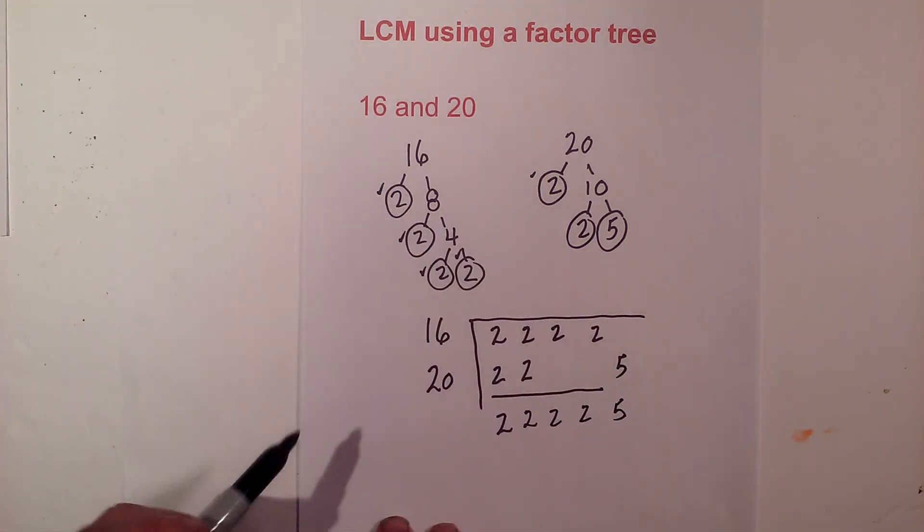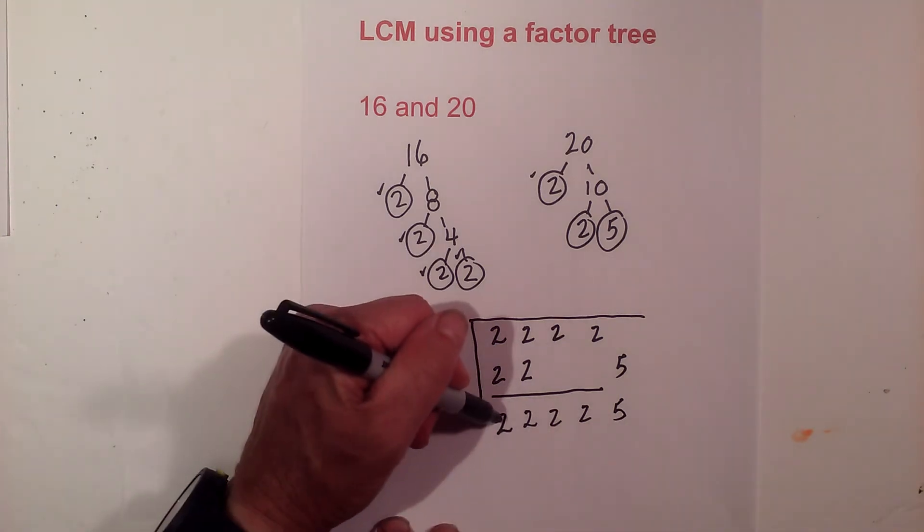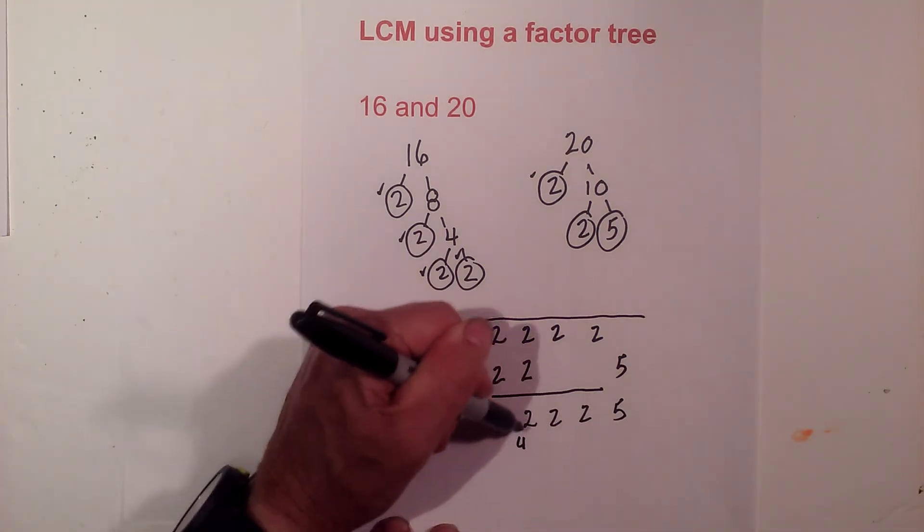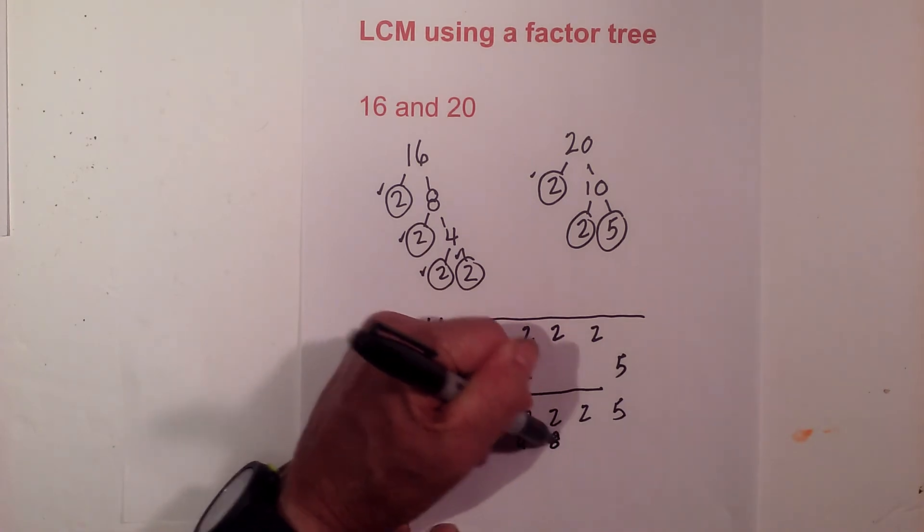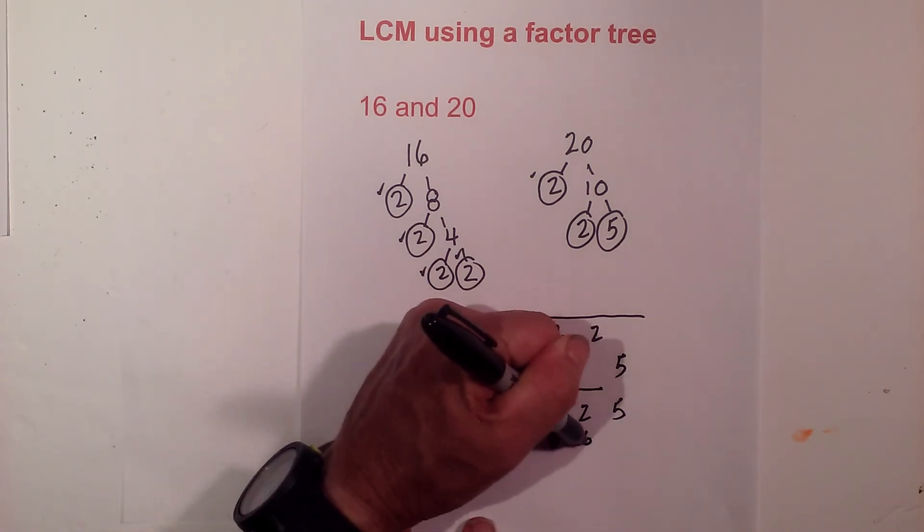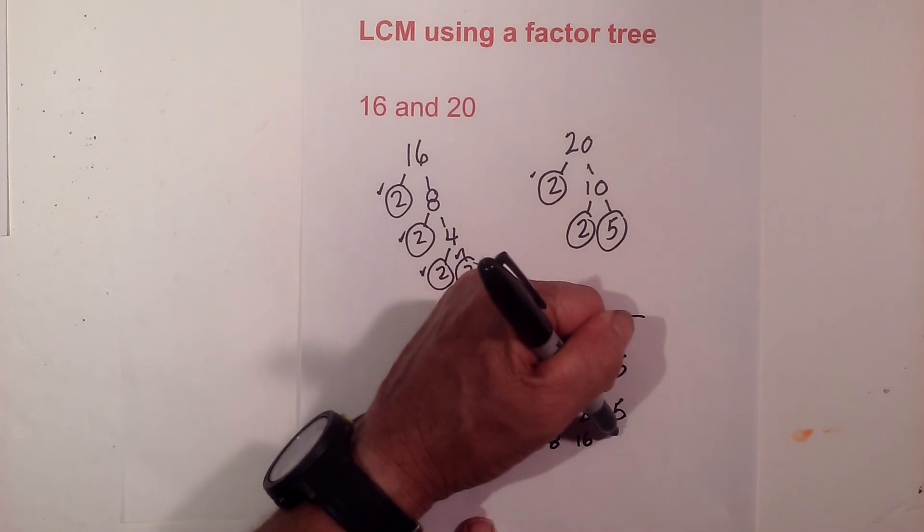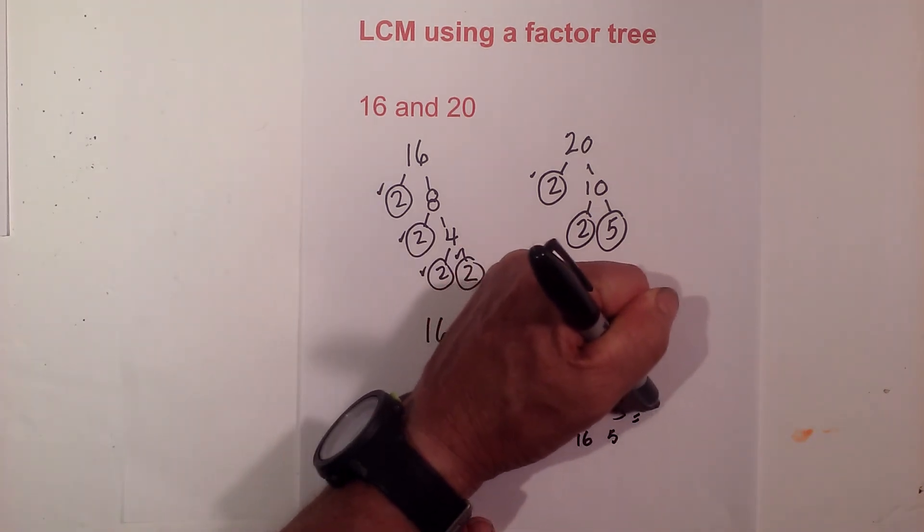So basically, all I do now is multiply these prime numbers together. 2 times 2 is 4, 4 times 2 is 8, 8 times 2 is 16, and then 16 times 5 equals 80.